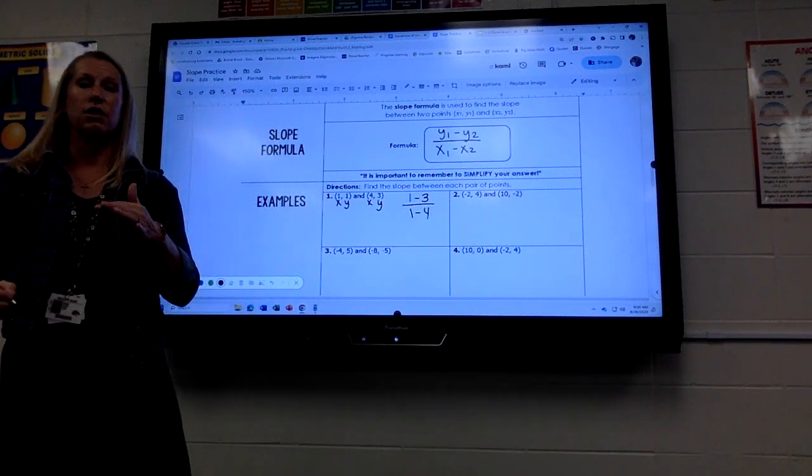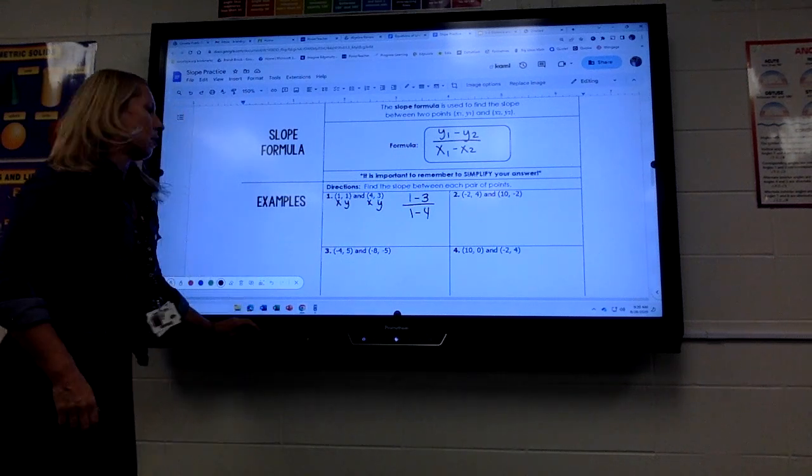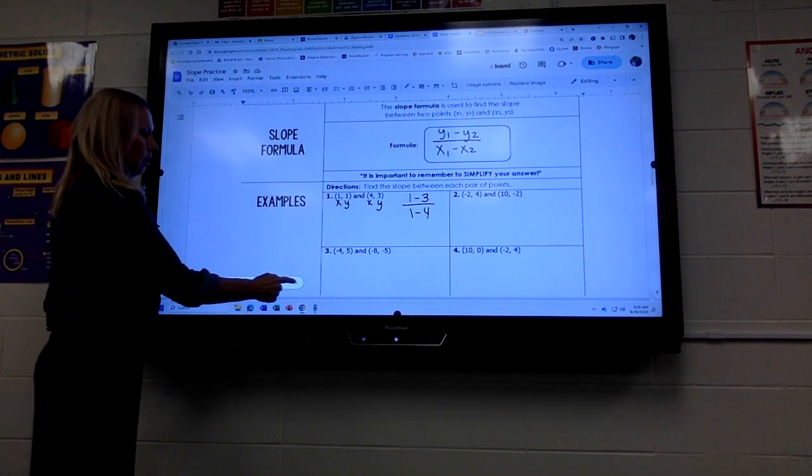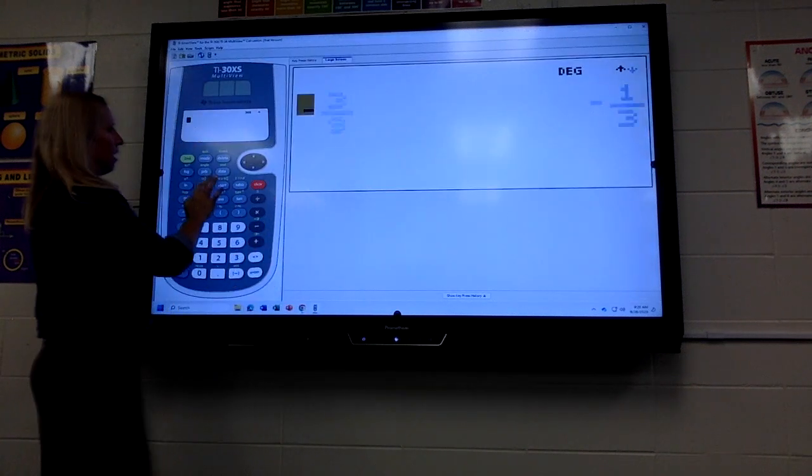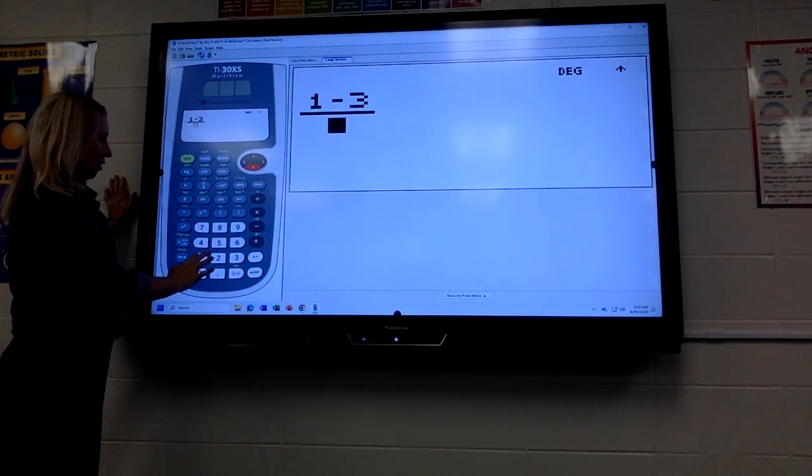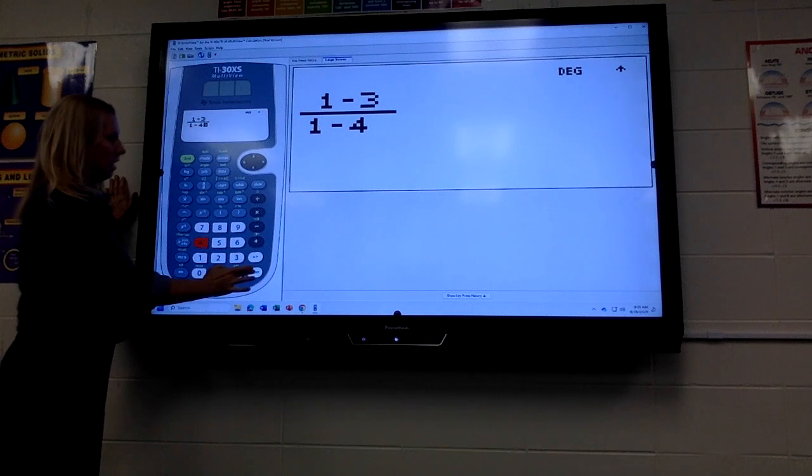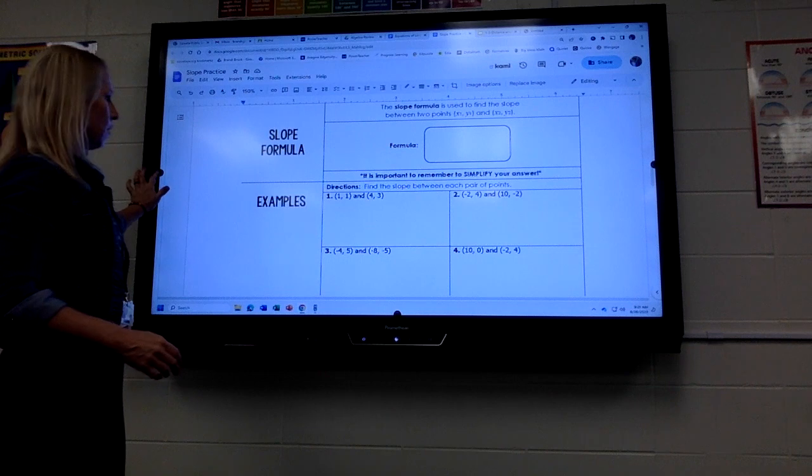So I would do 1 minus 3 over 1 minus 4. So we can type that in the calculator using that N over D button. Hit enter, and it is 2 thirds. So that would be your slope for that one.